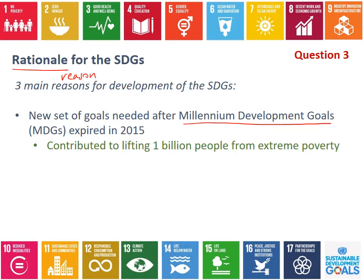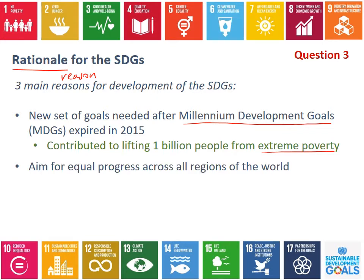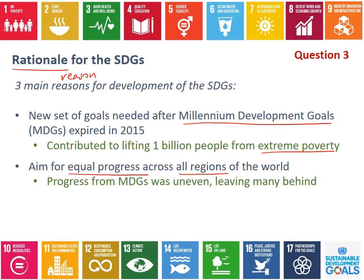The MDGs did contribute to lifting a billion people from extreme poverty. Another rationale for the development of the SDGs is to aim for equal progress across all regions of the world. Following the end of the Millennium Development Goals in 2015, reviews and monitoring showed that the progress achieved was uneven, and a lot of people were left behind. We've talked a lot in this subject about inequality, and that was really obvious after the MDGs.